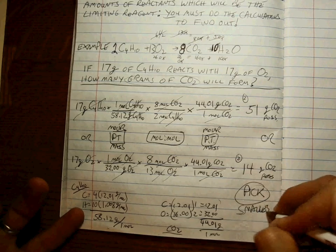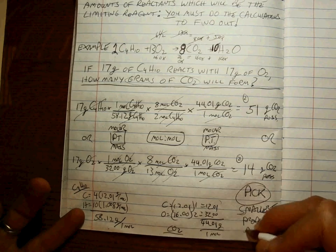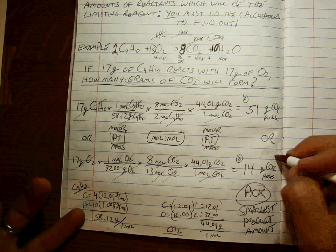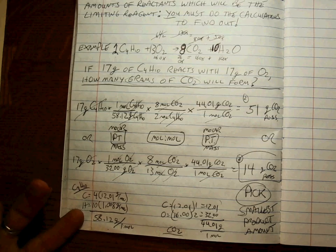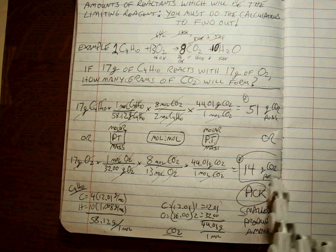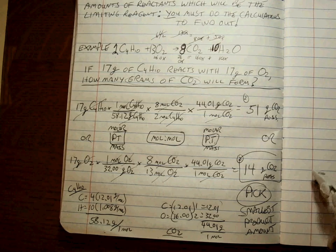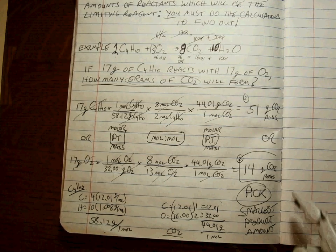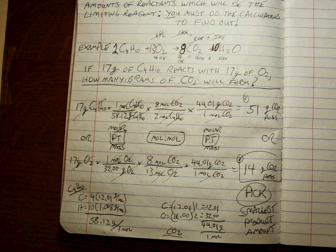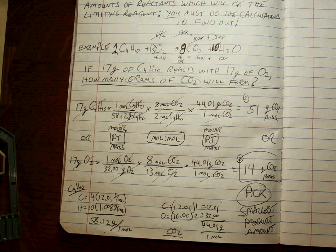So how do you decide? You pick the smallest amount of product. That's 14 grams of CO2 — that's actually the amount that gets made. The 51-gram result was just a test calculation we can set aside, because that reaction doesn't fully occur. 14 grams of CO2 is the final answer.